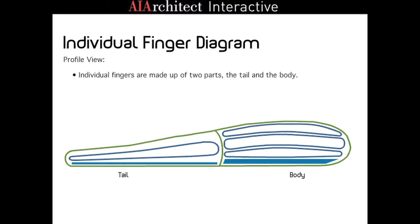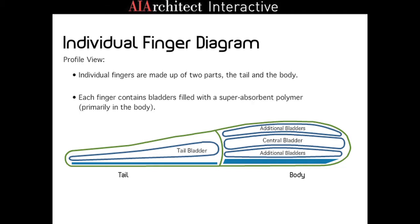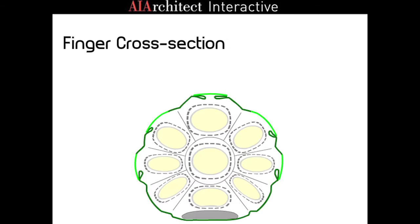Individual fingers are made up of two parts. Each finger contains bladders filled with a superabsorbent polymer. Each finger has a central bladder surrounded by eight others, all filled with a superabsorbent polymer, a material commonly seen in baby diapers.